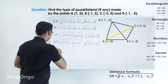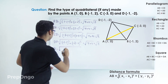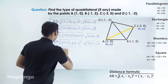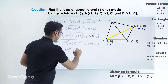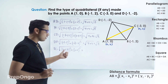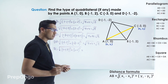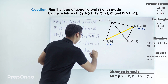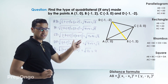Let's calculate AC first. Putting the values in the distance formula, this will be (1 minus minus 3) squared plus (0 minus 0) squared. Solving: 1 plus 3 is 4, and 4 squared is 16, so we can write it as root 16, which equals 4.